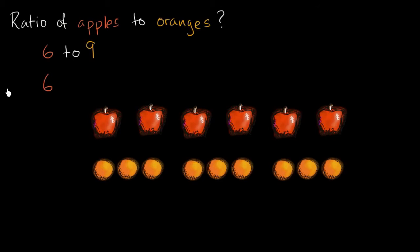And you could use different notation. You could also write it this way. Six to nine, you would still read it as the ratio as being six to nine.